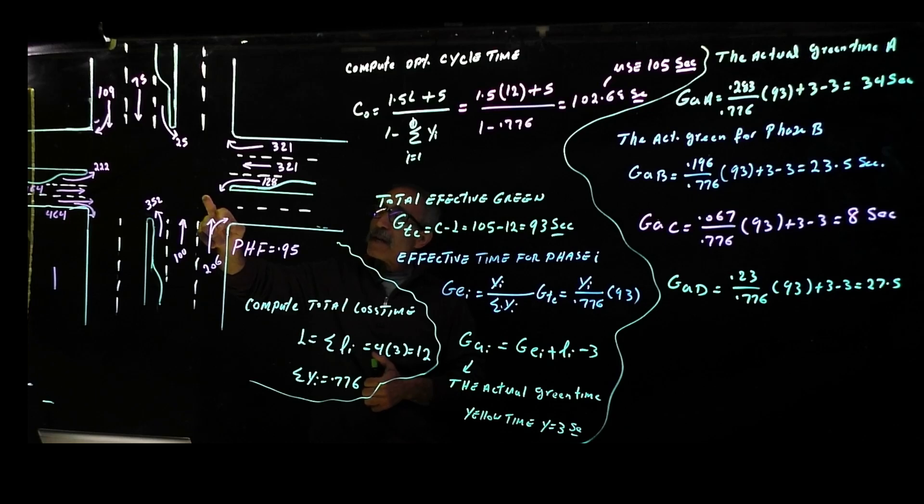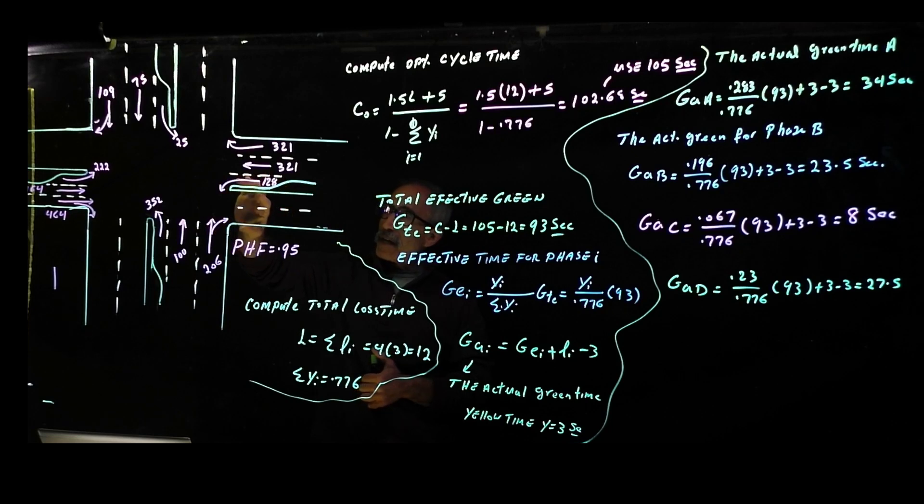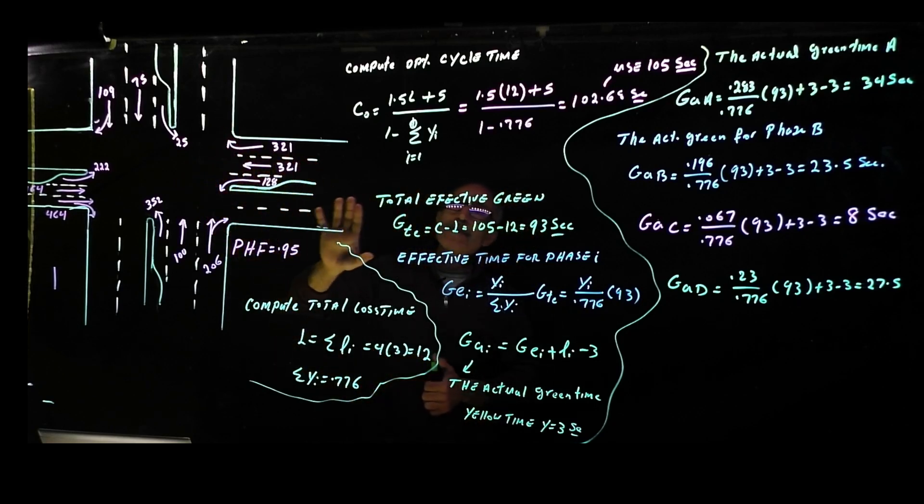Sometimes you have more phases, you might have a red, yellow arrow, green in here, and we can do that. We take this number and go to the computer program Autodesk Infraworks and individually time these left turns. This was using Webster method.